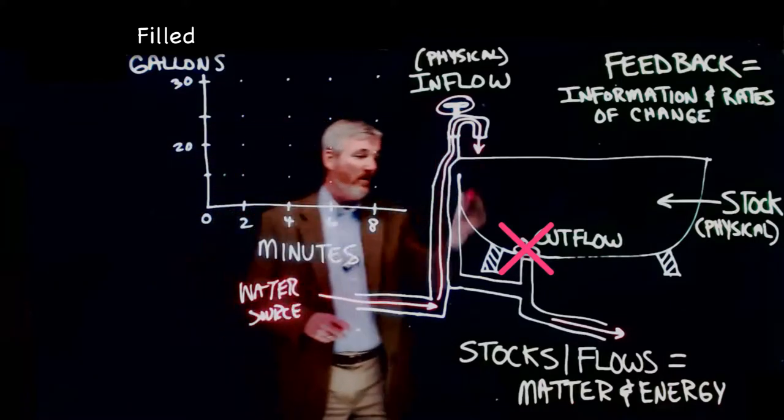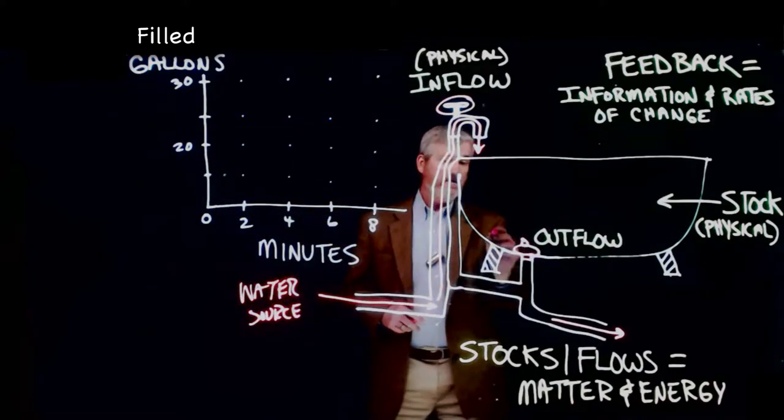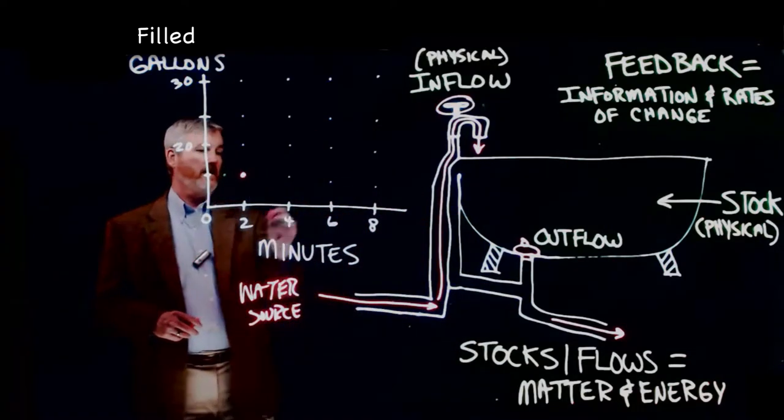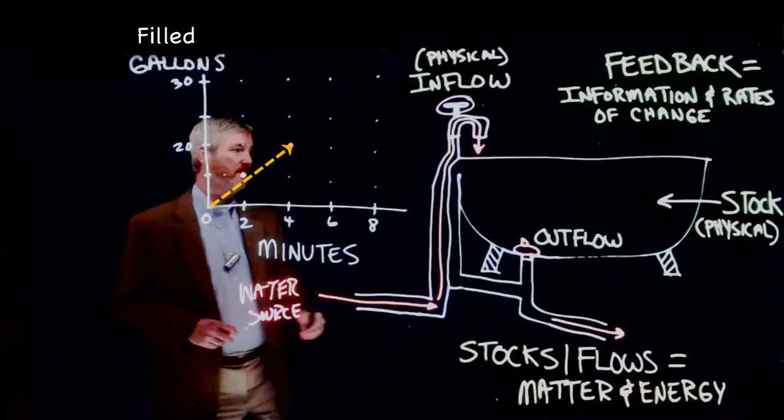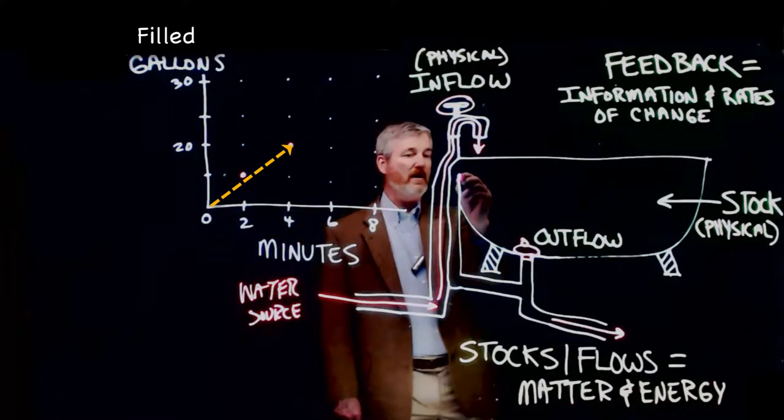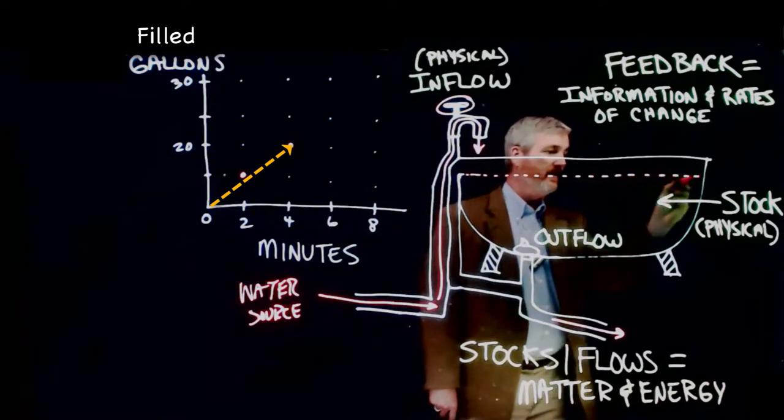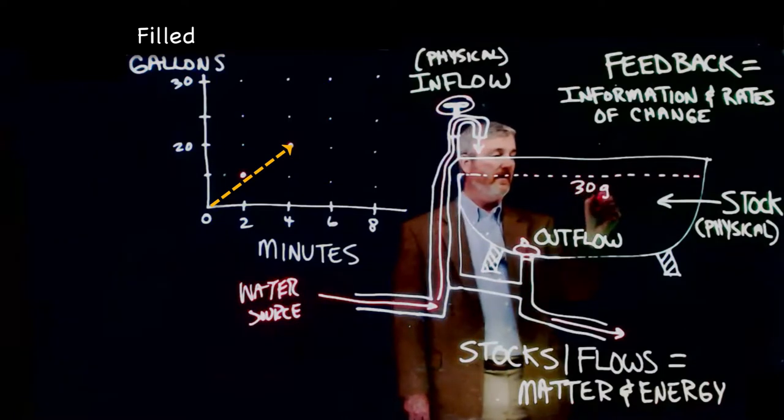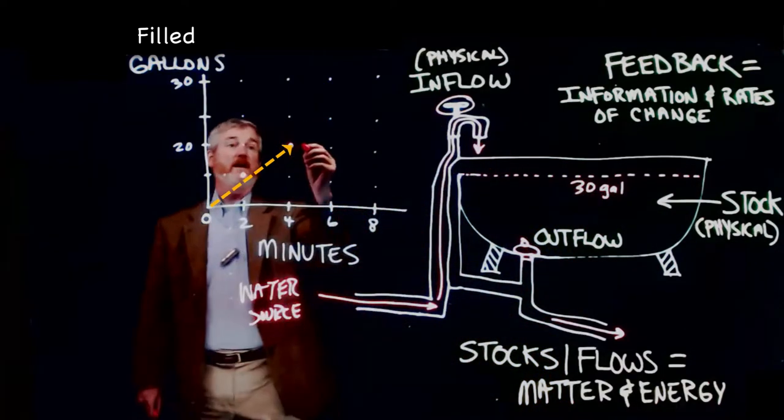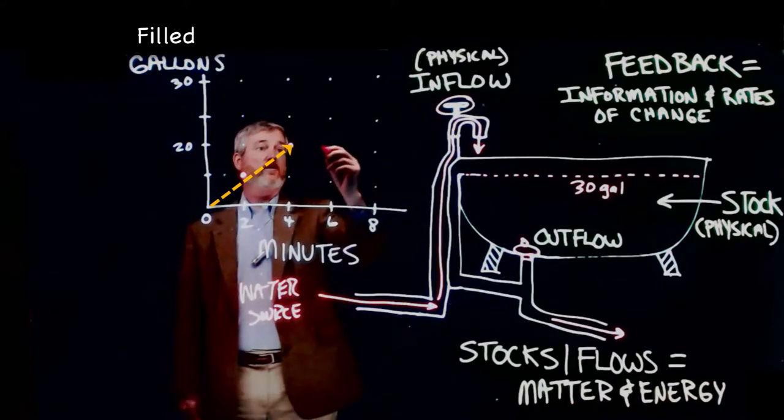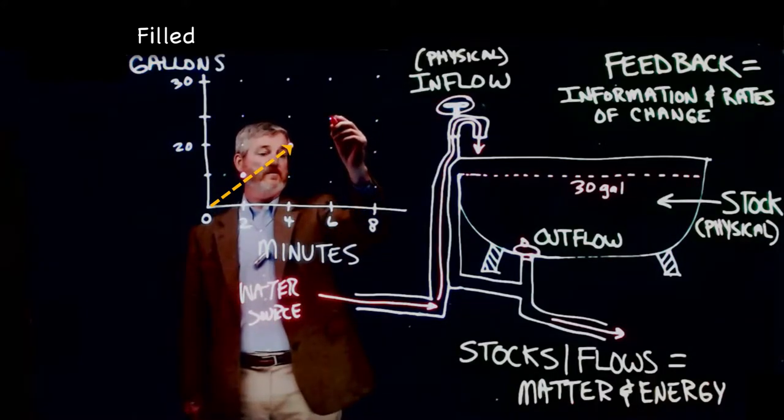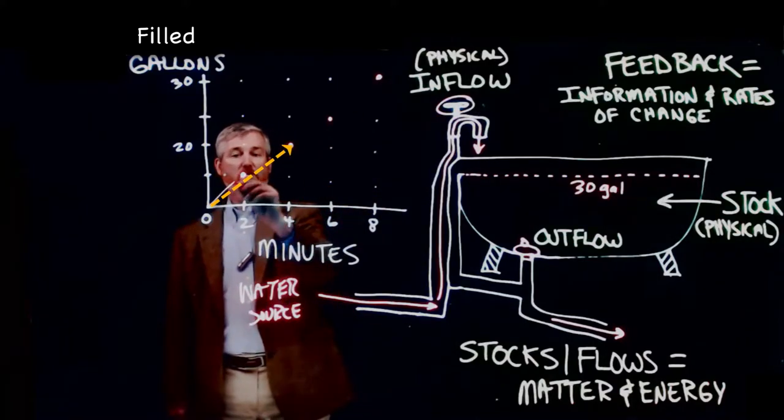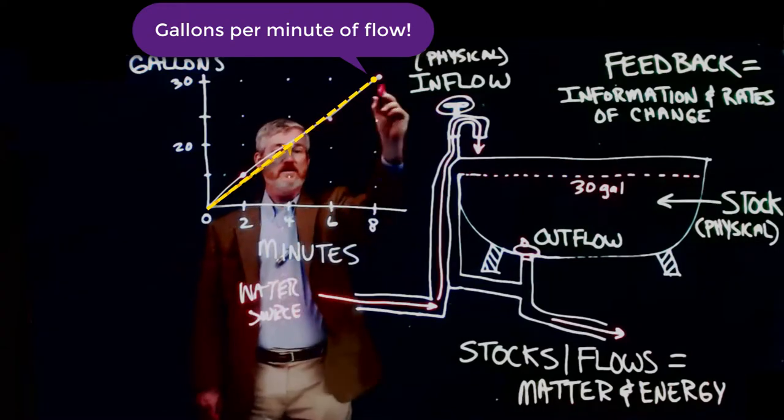Now in this case, we've got water going in. Water is slowly filling up the bathtub. So at two minutes, let's say we're going to have 10 gallons. At four minutes, we're going to have 20 gallons. And let's say right about here, the volume of the bathtub is 30 gallons. So that means that at about six or eight minutes, depending on how long it takes to fill it up, let's just assume that at six minutes it's going to be 25 and at eight minutes it's going to be 30. So our behavior over time is going to be a steep rising curve.